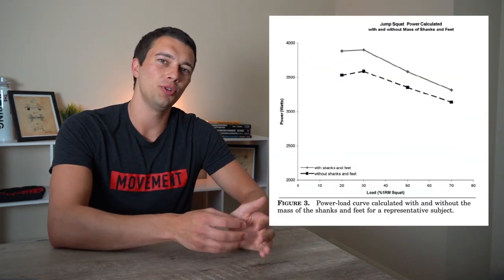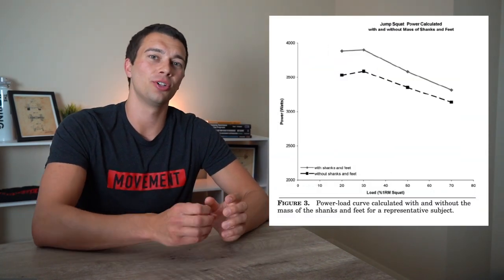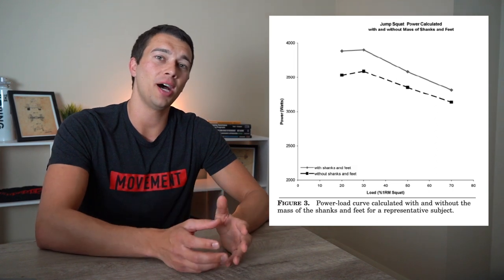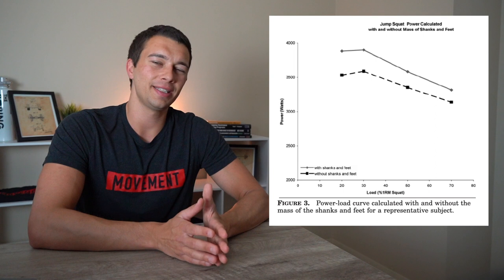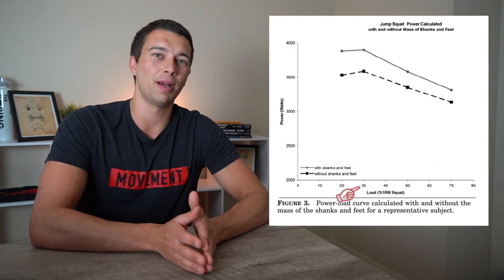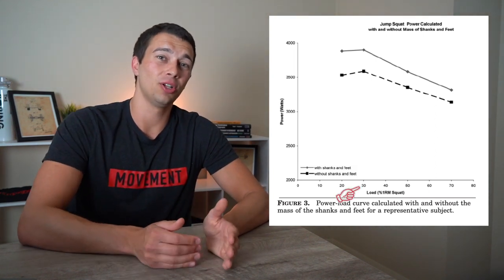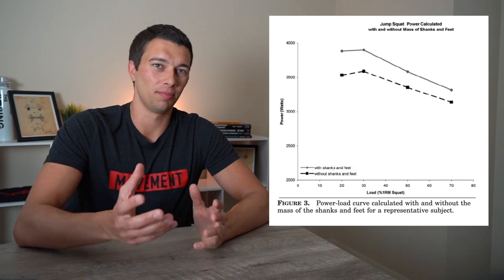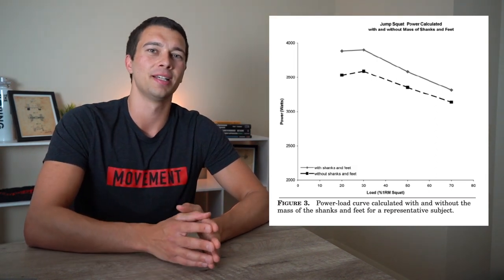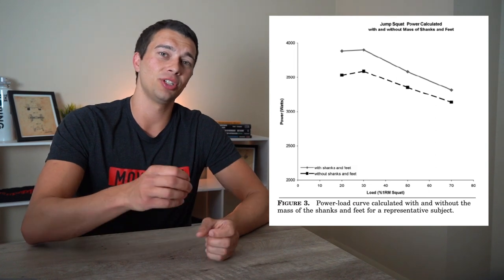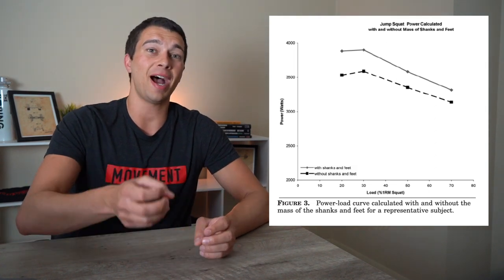Some practical takeaways based on research: the optimal load to generate maximal power during, for example, a loaded jump squat can range anywhere from 10 to 50%, but for most athletes hits around 30% of one rep max. That's actually a fairly low load when we're thinking about how we program for athletes. We very rarely program 30% one rep max, but in this case, that's actually the load that's going to maximize power.